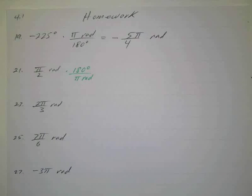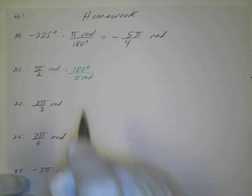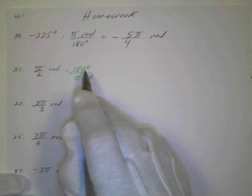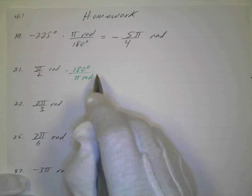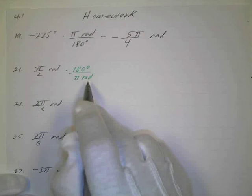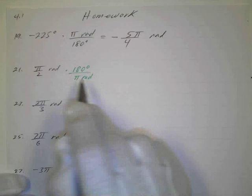So we've got number 21, we've got π/2 radians. So we're going to use the conversion function, we're just going to flip it, we know that there's 180 degrees for π radians. All right, there's 360 degrees for 2π radians, there's 180 degrees for π radians.